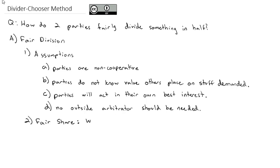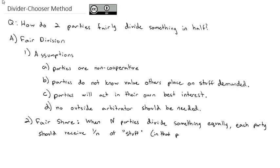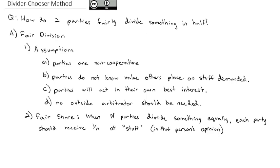Now, the best way to say a fair share is when we've got some number of parties, we'll call it n parties or people involved, who are going to divide something equally, each party should receive 1 over n of the stuff, at least in that person's opinion. So if there's five parties, every person should get one-fifth of the stuff. If there's three parties, everybody should get one-third of the stuff in each person's individual opinion.